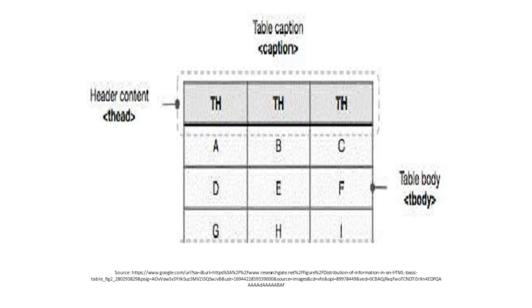Now, first of all, we have to understand what a table is. As you can see in this slide, the table's first row is the table heading — these three are the table headings, called table head. Then we have table data and table body, T-body. So a table is divided into two parts: the first is the table heading and the second is the table body.